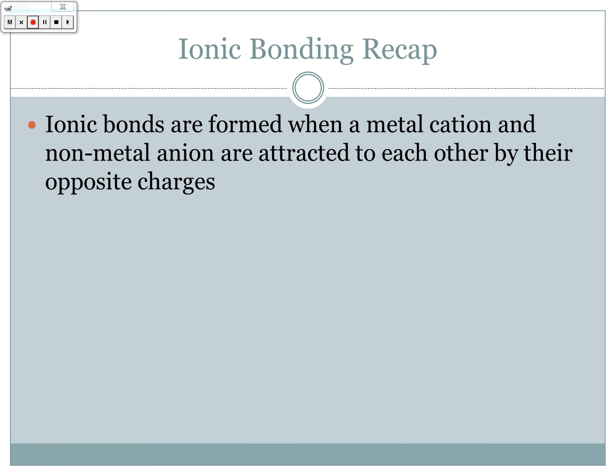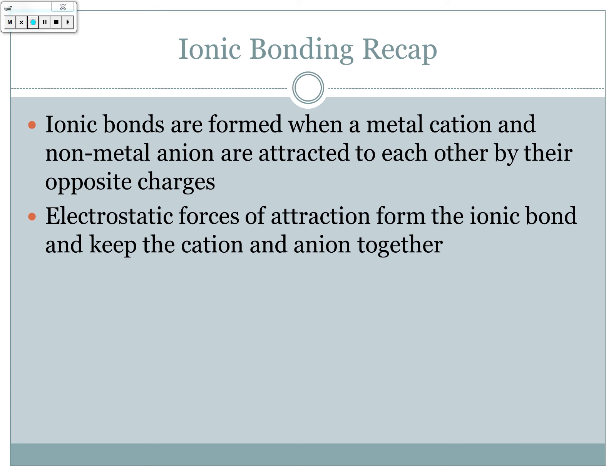Ionic bonds are formed when a metal cation and a non-metal anion are attracted to each other by their opposite charges. Electrostatic forces of attraction form the ionic bond and keep the cation, which is the positively charged ion, and the anion, the negatively charged ion, together.